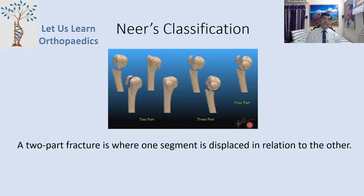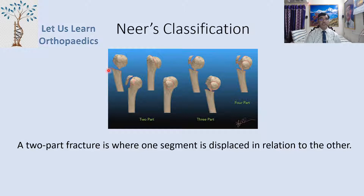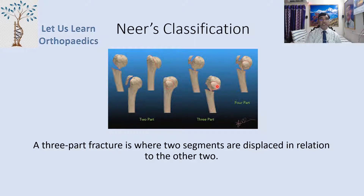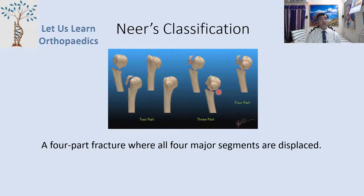A two-part fracture is where one segment is displaced in relation to the other — for example, the greater tuberosity or the shaft is displaced. A three-part fracture is where two segments are displaced in relation to the other two, such as the shaft and GT, or shaft and LT. A four-part fracture is where all four major segments are displaced.